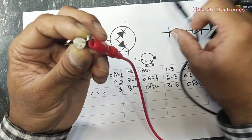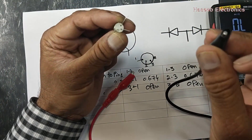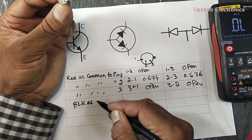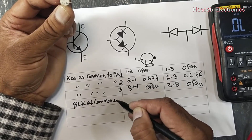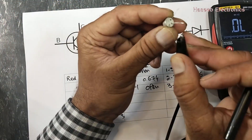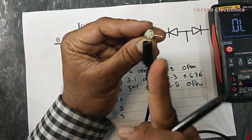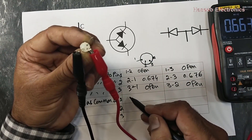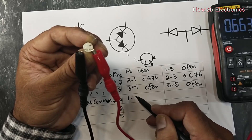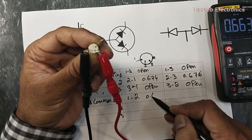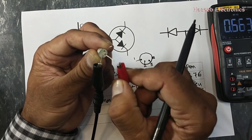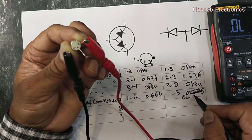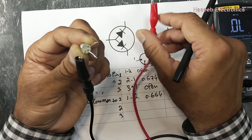Before this we were selecting red lead as common. Now we will select black lead as common and repeat the first three steps. Black as common to pin number 1, then 2, then 3. In step one, red was common — but now black is common. Check reading between pin number 1 and 2 — it is 0.664. Now move red lead to pin number 3 — pin 1 and 3 — it is OL, open circuit.